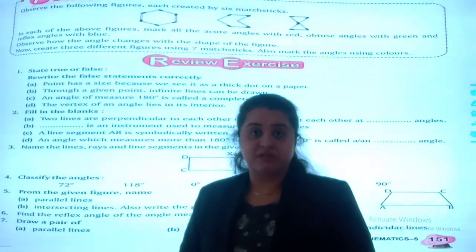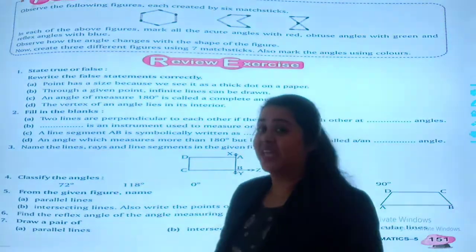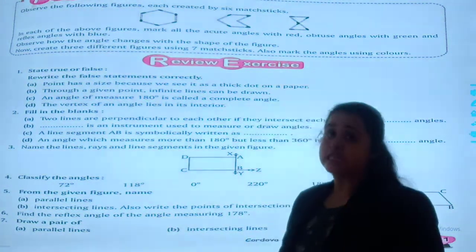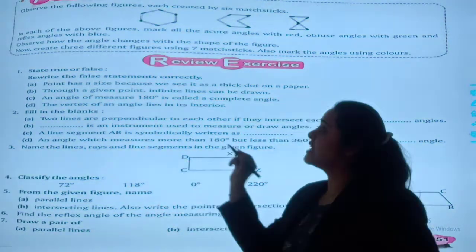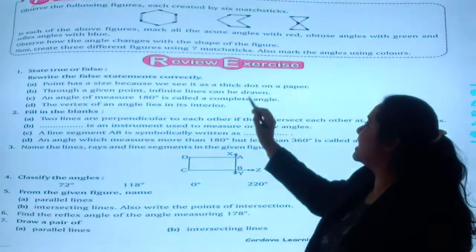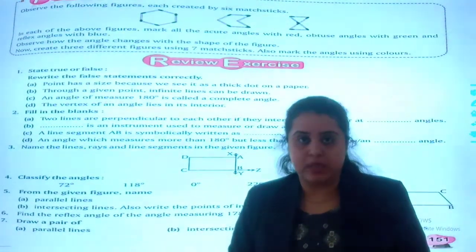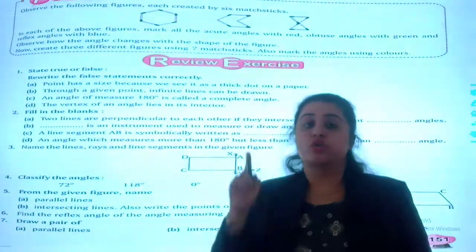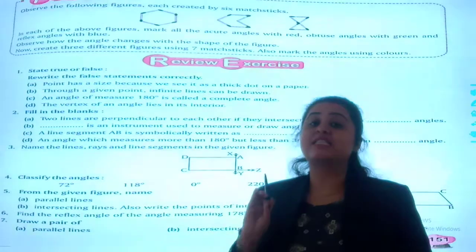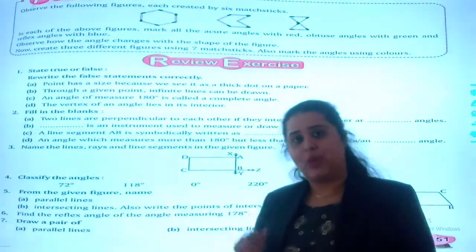Your first question is, and you have to rewrite the false statement. The first is, points has a size because we see it as a thick dot on a paper. So the first one is false. In that, you will write as, point has no definite size.